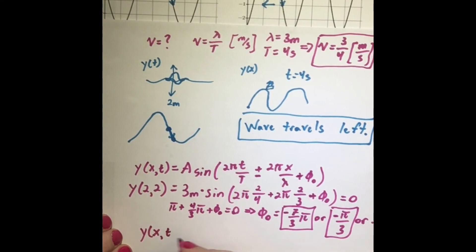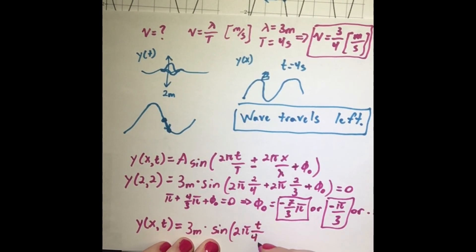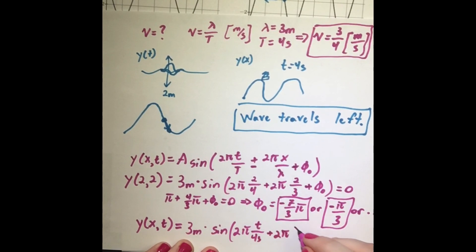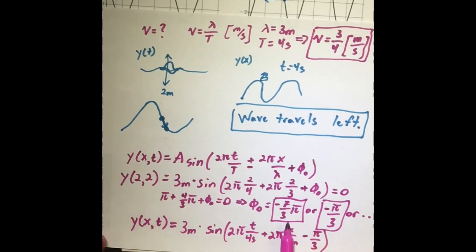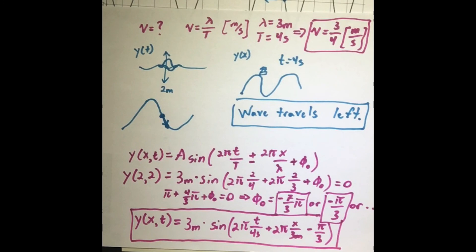For completeness, the full wave equation for this problem is: y(x, t) = 3·sin(2π·t/4 + 2π·x/3 − π/3), or equivalently with −7π/3. That finishes our problem. If this was helpful, please leave a like, and I will see you in the next video!